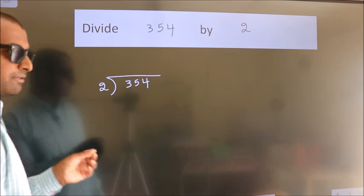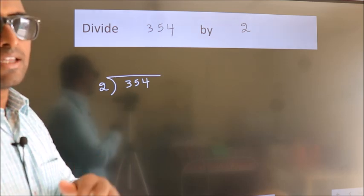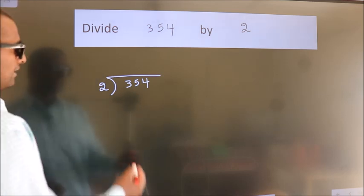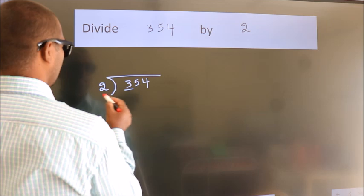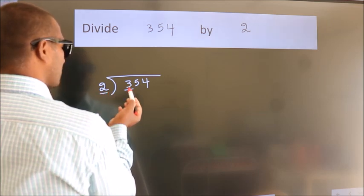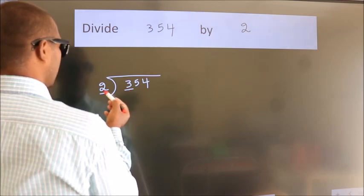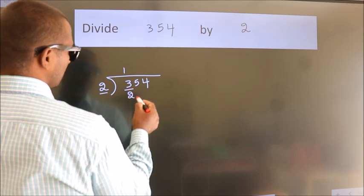This is your step 1. Next, here we have 3, here 2. A number close to 3 in 2 table is 2 once 2.